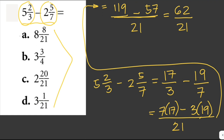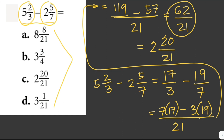The given choices are all mixed fractions, so we need to convert 62 over 21 into a mixed fraction. We divide 62 by 21 — there are two 21s in 62, so the whole number is 2, and the remainder is 20. Our answer is 2 and 20 over 21. The answer here is letter C.